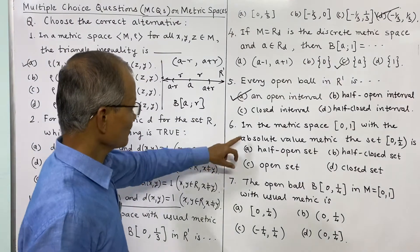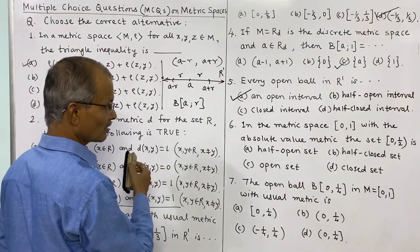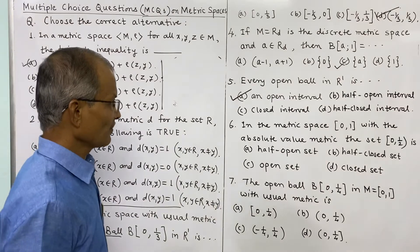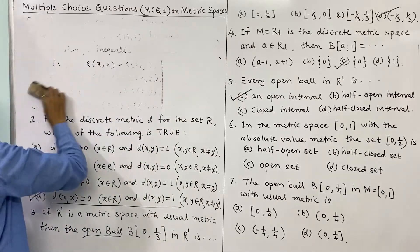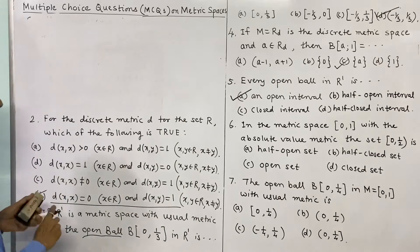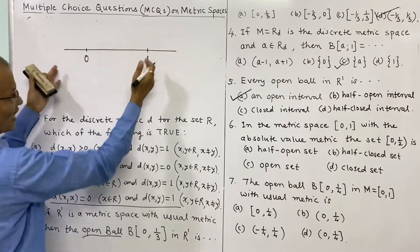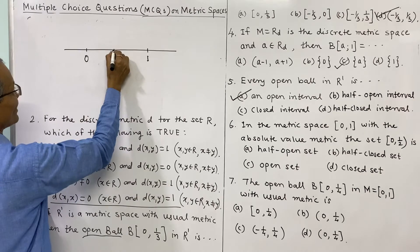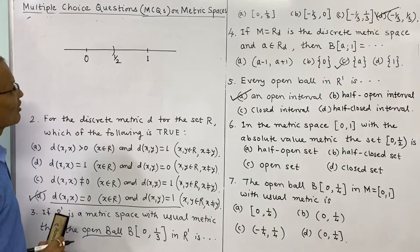The sixth question: in the metric space [0,1] with the absolute value metric, we consider what type of set. The metric space here is Young = [0,1] (the closed interval), and the metric is the absolute value. We now look at the open ball of radius 1/2 about 0 in Young and determine what kind of interval it represents.